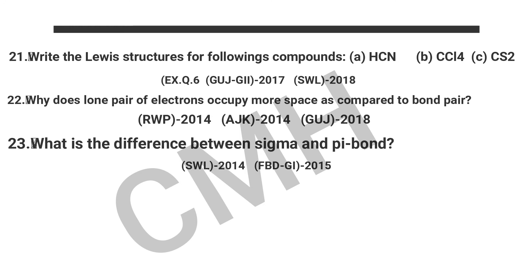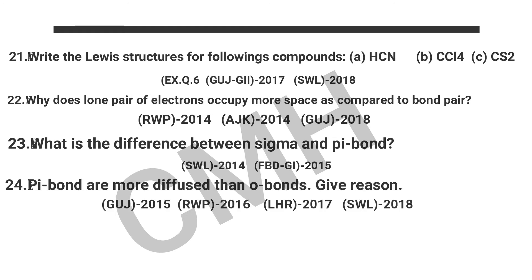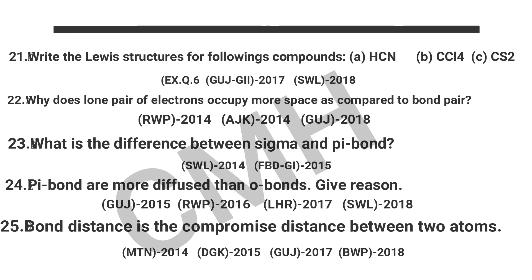Question number 22: Why does a lone pair of electrons occupy more space compared to a bond pair? Question number 23: What is the difference between a sigma bond and a pi bond? Question number 24: Pi bonds are more diffuse than sigma bonds — give reasons.